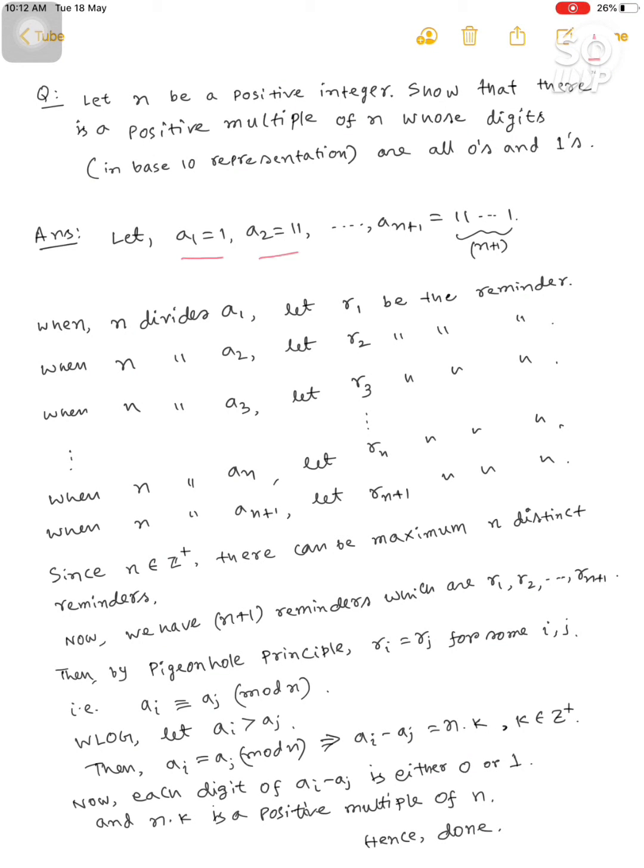Let a1 equals 1, a2 equals 11, and so on, with a_{n+1} being 111...1 (n+1 ones).